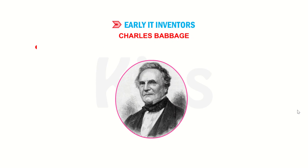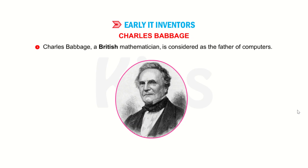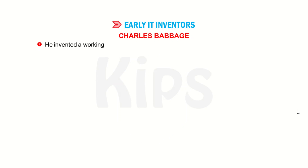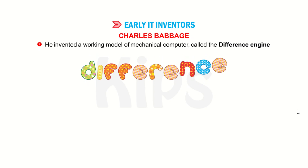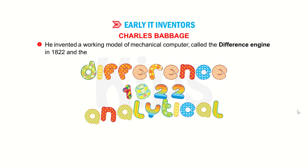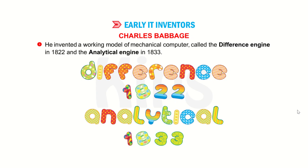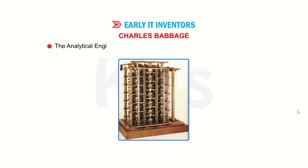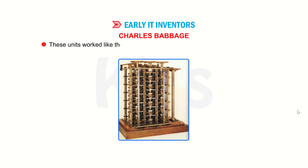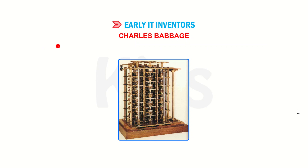Charles Babbage, a British mathematician, is considered as the father of computers. He invented a working model of the mechanical computer called the Difference Engine in 1822 and the Analytical Engine in 1833. The Analytical Engine had five units: input, output, store, mill and control. These units work like the modern computer. All the computers which are used nowadays are based on it. Store was used for storing data and mill was the calculating unit. The control unit was used for supervising all the units.